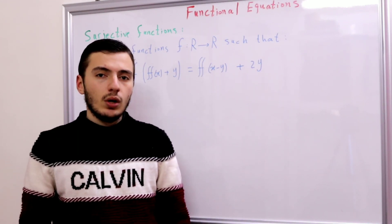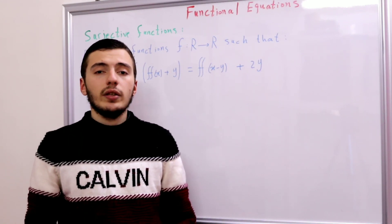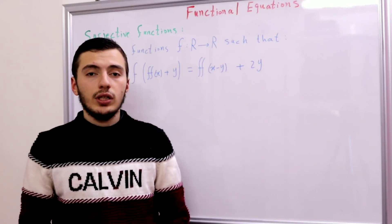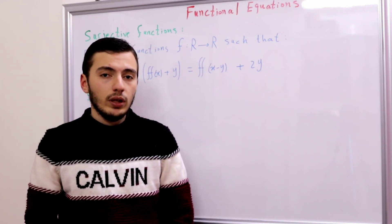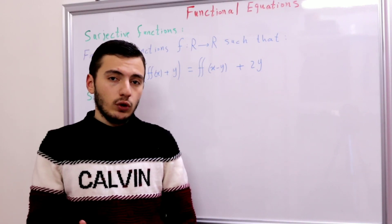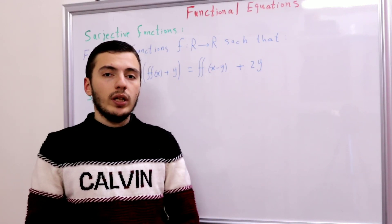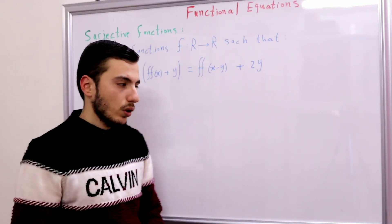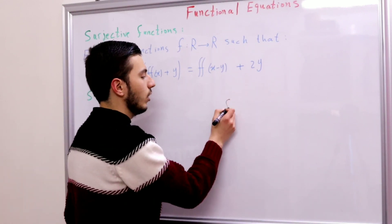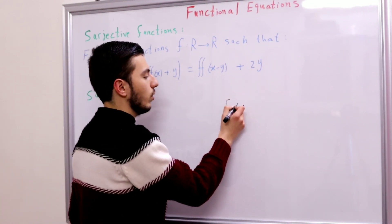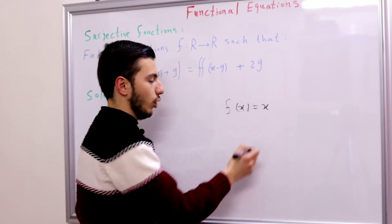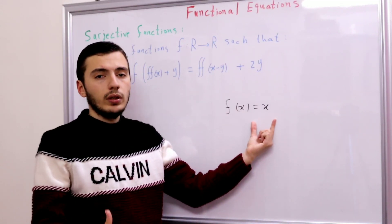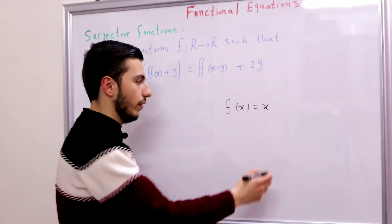The first question is: what is a subjective function, or when do we call a function subjective on R? We call a function subjective on R when it covers all real numbers. For example, consider f(x) = x, the identity function. This function covers all real numbers, so it is subjective.